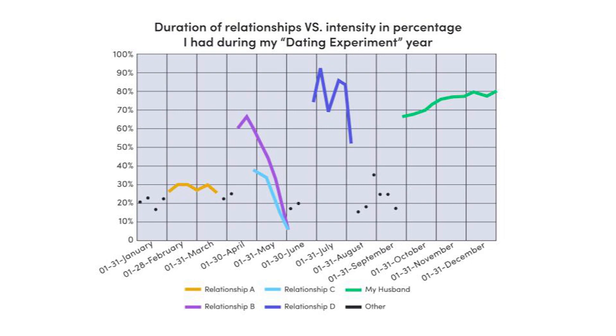Let me illustrate with a personal story. About ten years ago I was single and desperate for love, so I ran a dating experiment: one date every week for a year. I tracked what I felt and what happened, and made a graph about those relationships. Let's simplify it together. First, remove the background — it serves no purpose. Do we really need to know the exact day of each month and its full name? No — we can space it out and use abbreviations.